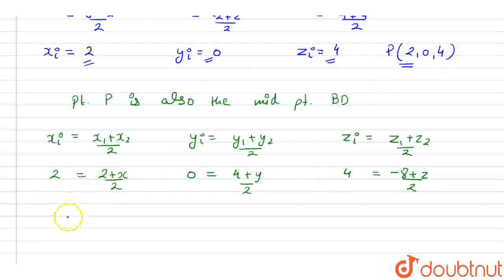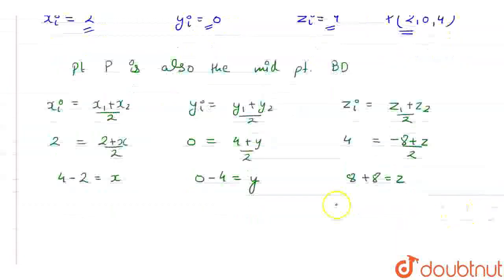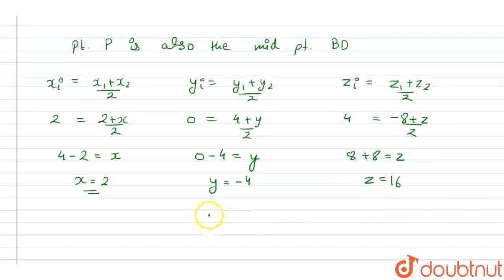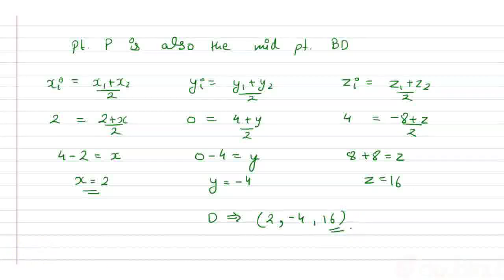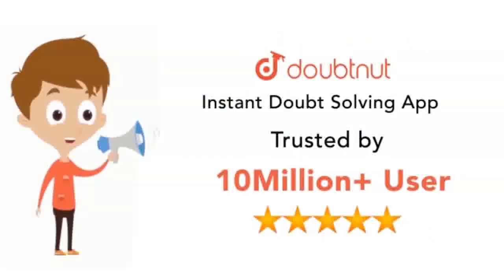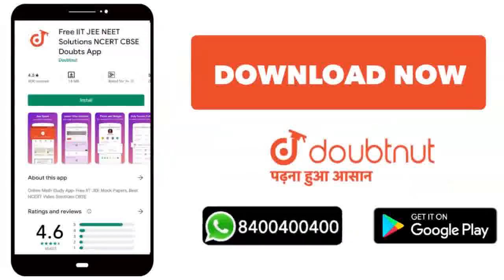Simplifying: x = 4 - 2 = 2, y = 0 - 4 = -4, and z = 8 + 8 = 16. So the vertex D is equal to (2, -4, 16). This is our answer. Thank you.